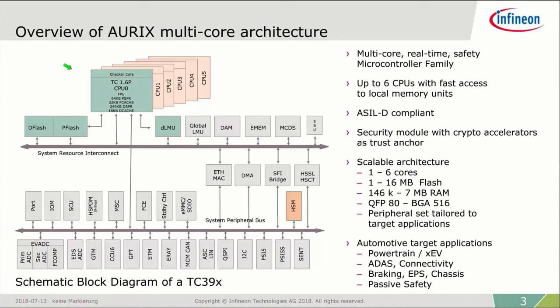Aurix differentiates mainly through the high computing power of the tricores, the real-time performance with shortest reaction times and guaranteed response times to events, and of course the comprehensive safety features. This picture shows the block diagram of a TC39X, a high-end derivative of the Aurix TC3X family. We have six cores here. The cores are directly connected to the internal RAMs and flash memory, and also connected to the system interconnectors. We also have other memory types, the MCDS, the DMA, fast communication interfaces, and peripherals connected to the system peripheral bus, with a bridge connecting both buses.